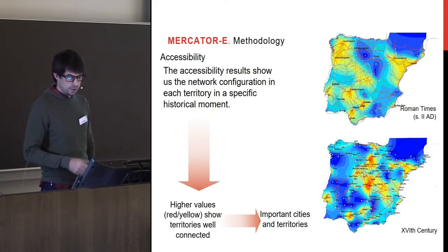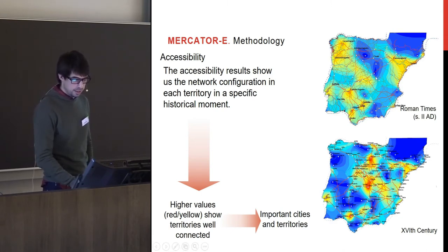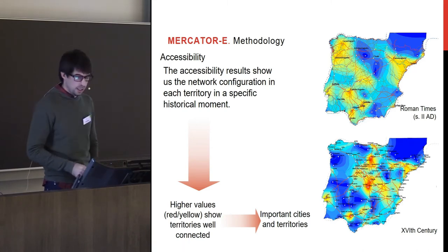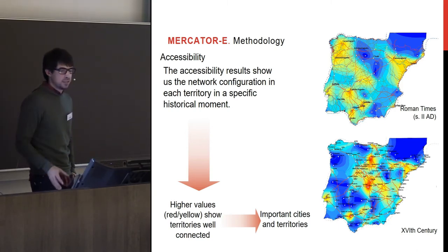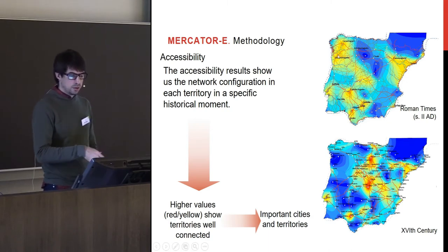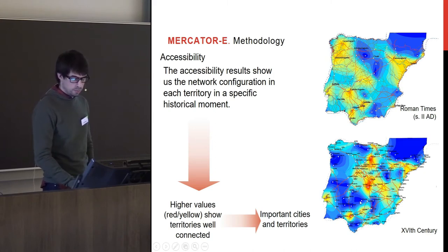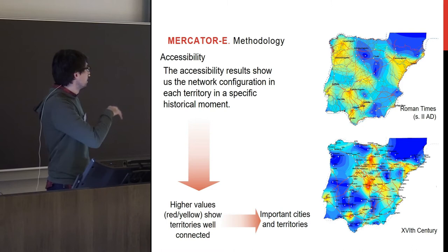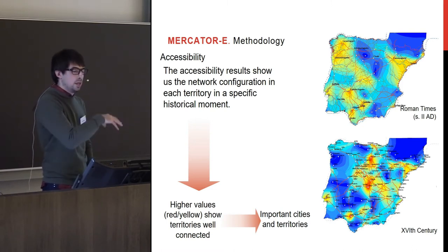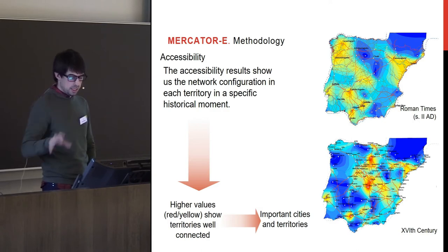I did the same analysis for the entire peninsula. We can see different well-connected zones, shown in yellow or red, always related to the provincial capitals or, in the north, with gold extraction sites. We can compare that with a map I made of connectivity in the 16th century, and you can see the differences between territories and how the network is completely different between Roman times and the 16th century.